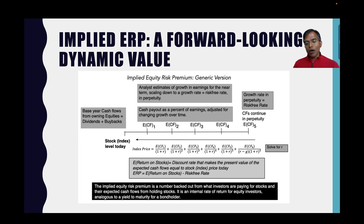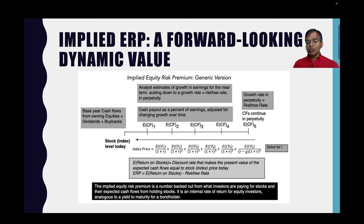Stocks can last forever, but I can't estimate cash flows forever. At the end of year five, in my estimation, I stop and assume that beyond that, cash flows continue to grow forever at the risk-free rate. So my cash flows are essentially not just for the next five years — they're forever. And I solve for that discount rate. In Excel, you can use the Solver or Goal Seek function because you know the level of the index, you know the cash flows, and you can solve for the discount rate that makes the present value of the cash flows equal to the index. That's an internal rate of return for stocks — an expected annual return on stocks for the long term. You subtract out the risk-free rate and you get an implied equity risk premium.